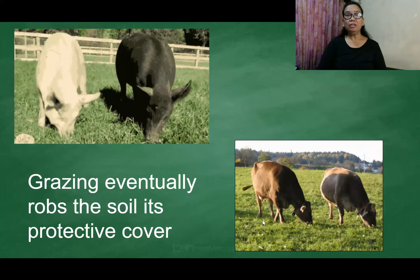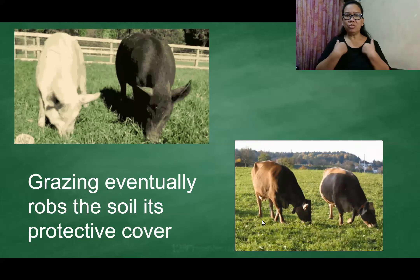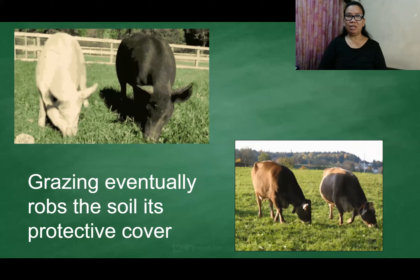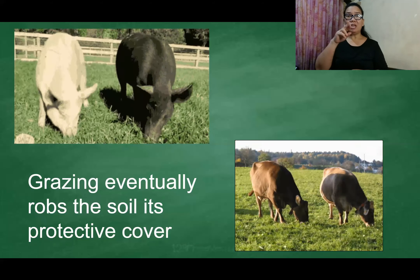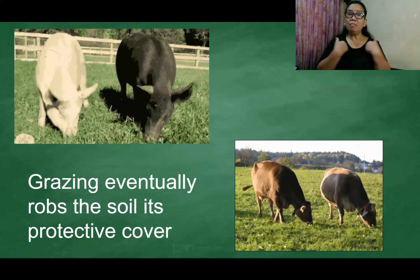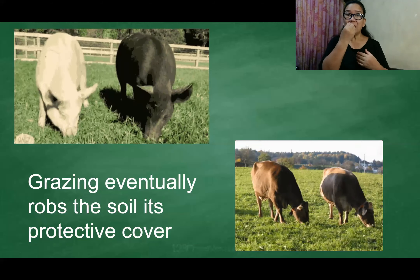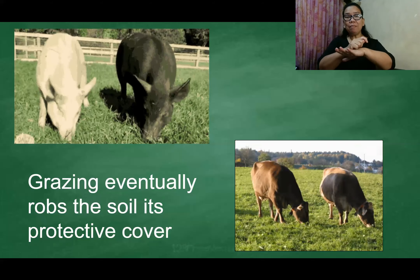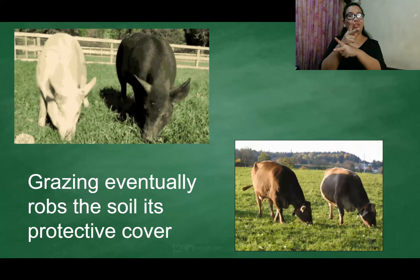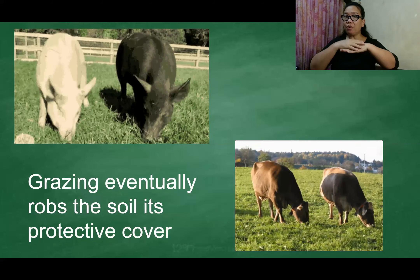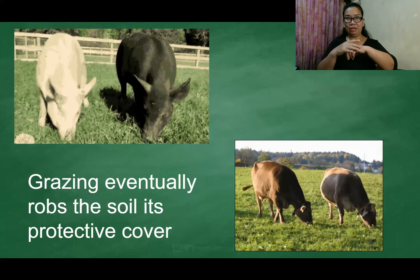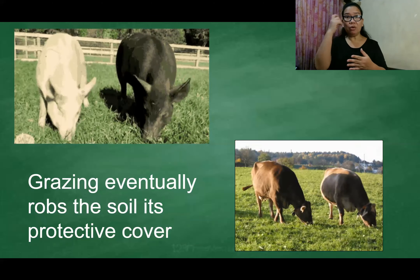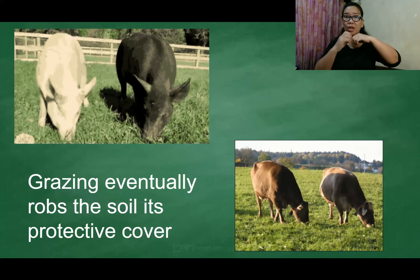And what are these animals doing? They are grazing. Grazing by animals or cattle removes the top protective cover of the earth, and that is also a cause of erosion.